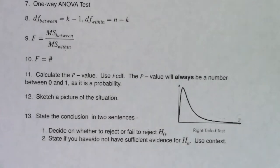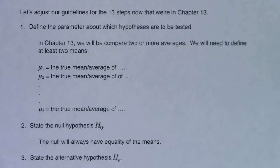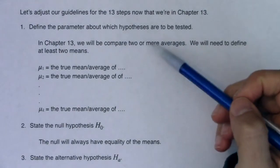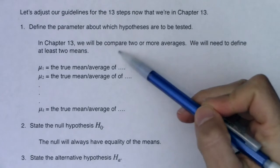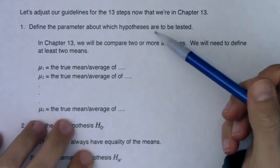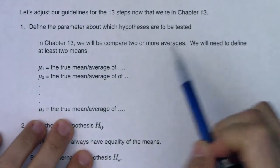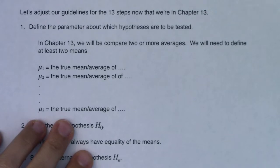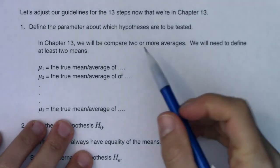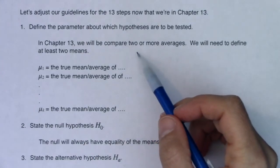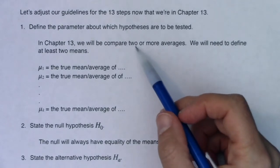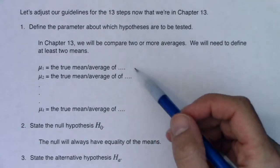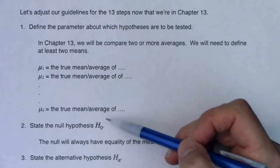Let's just take a look at our general guidelines for our hypothesis tests. Taking a look at our 13 steps now that we're in chapter 13. For step one, it's always defining a parameter. And you're going to be comparing two or more averages. You technically, with two averages or two groups, you could run an ANOVA instead of a two-sample t-test. If you have three or more, you have to run ANOVA. But you're going to be defining a bunch of mu's for me.